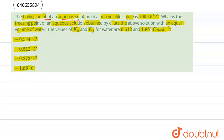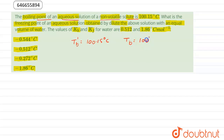In the question we are given the boiling point of an aqueous solution containing a non-volatile solute. The boiling point of the solution Tb = 100.15°C and boiling point of pure water is 100°C, so ΔTb = 0.15°C, obtained by subtracting these two values.